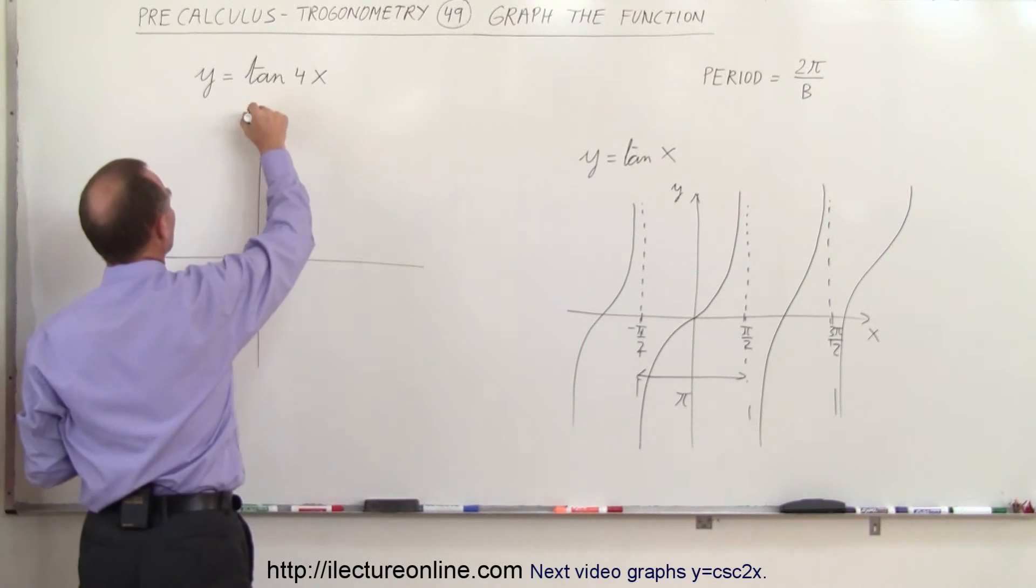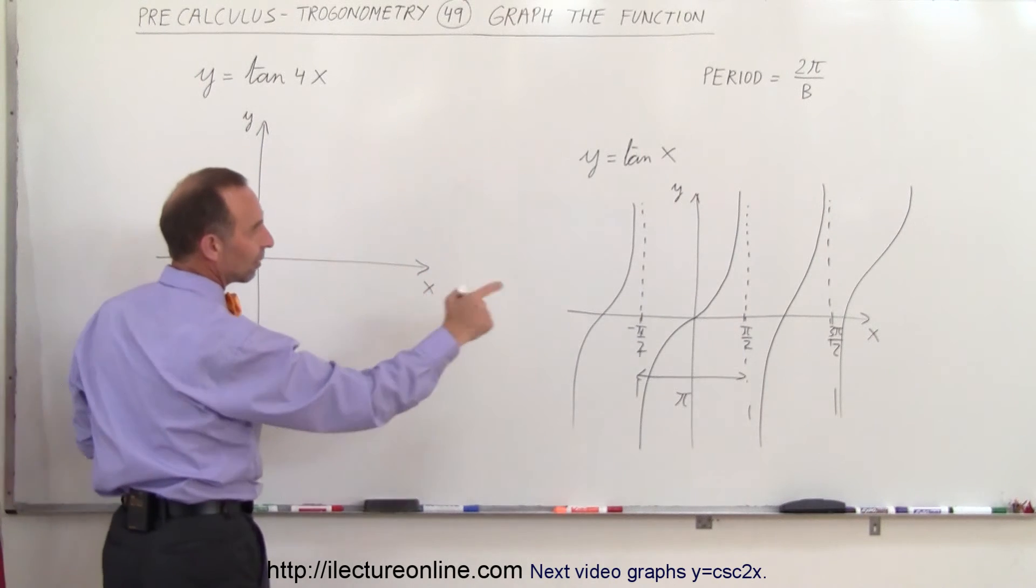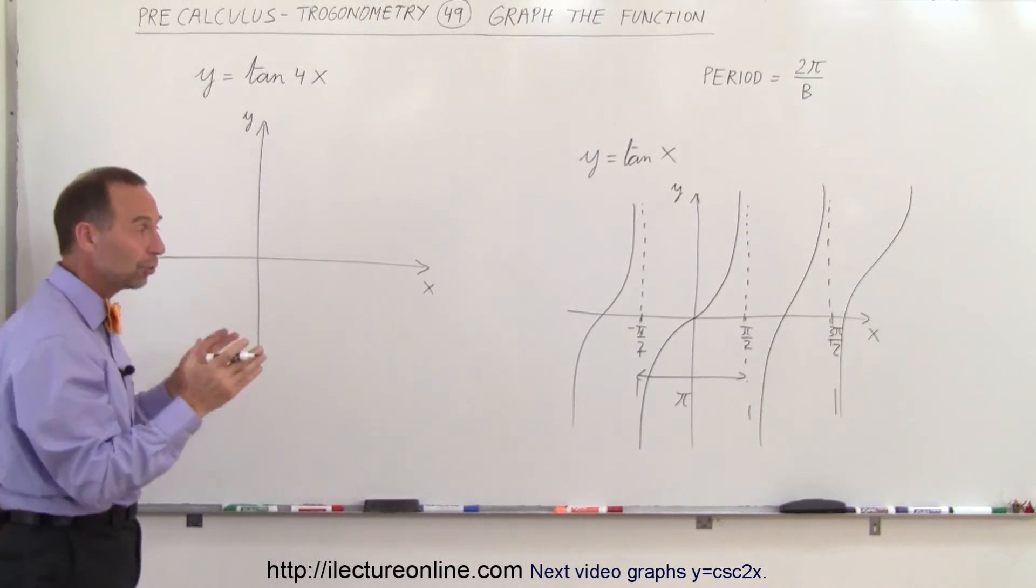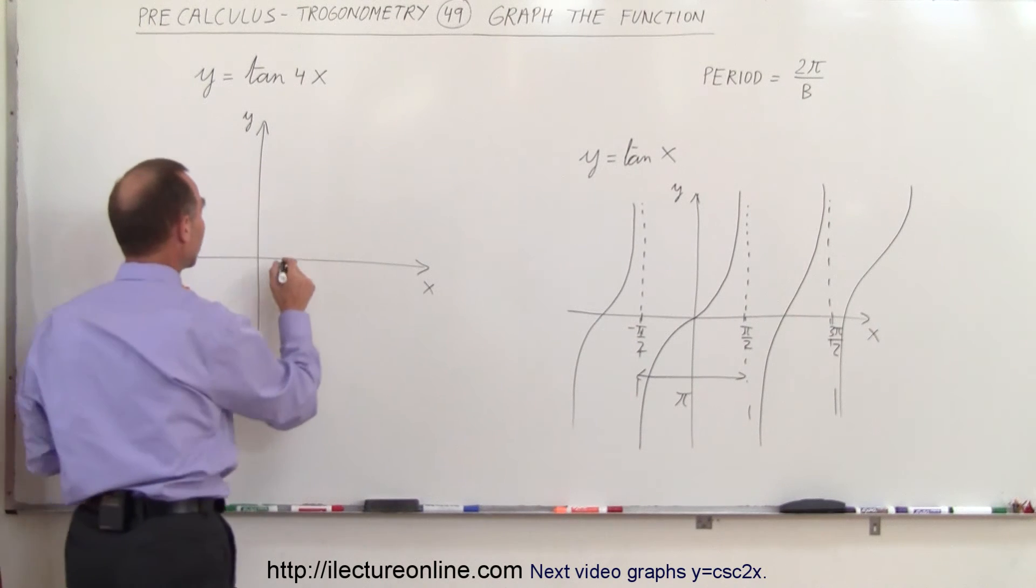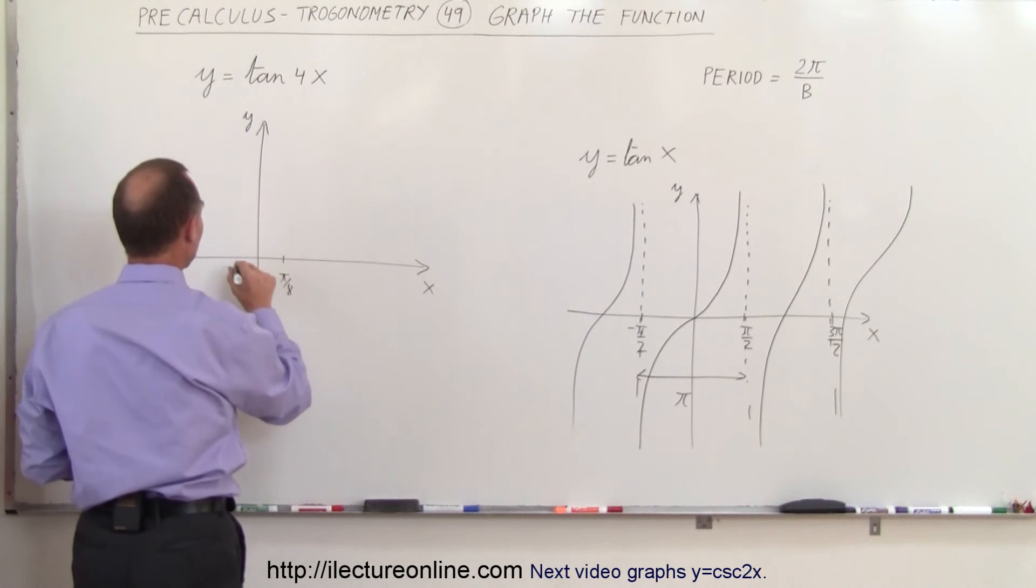so again here we have our y-axis, we have our x-axis, and so it reduces it down to, instead of going from minus pi over 2 to plus pi over 2, we reduce that by a factor of 4, so this will now be pi over 8 to minus pi over 8.